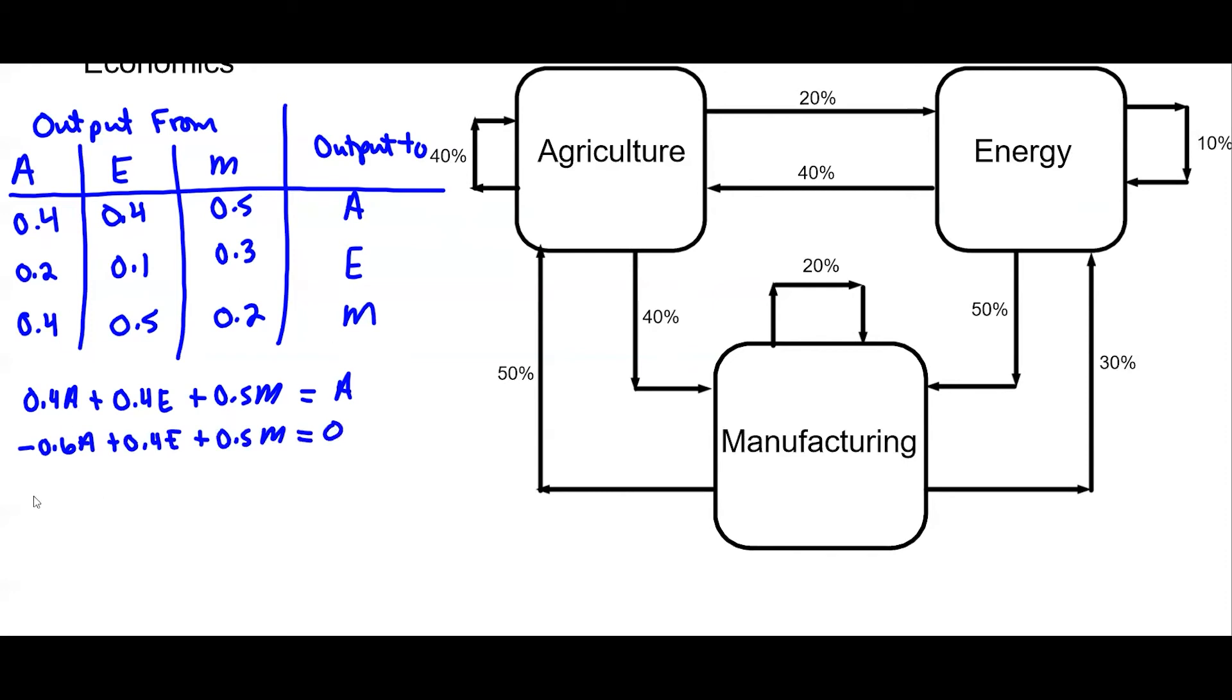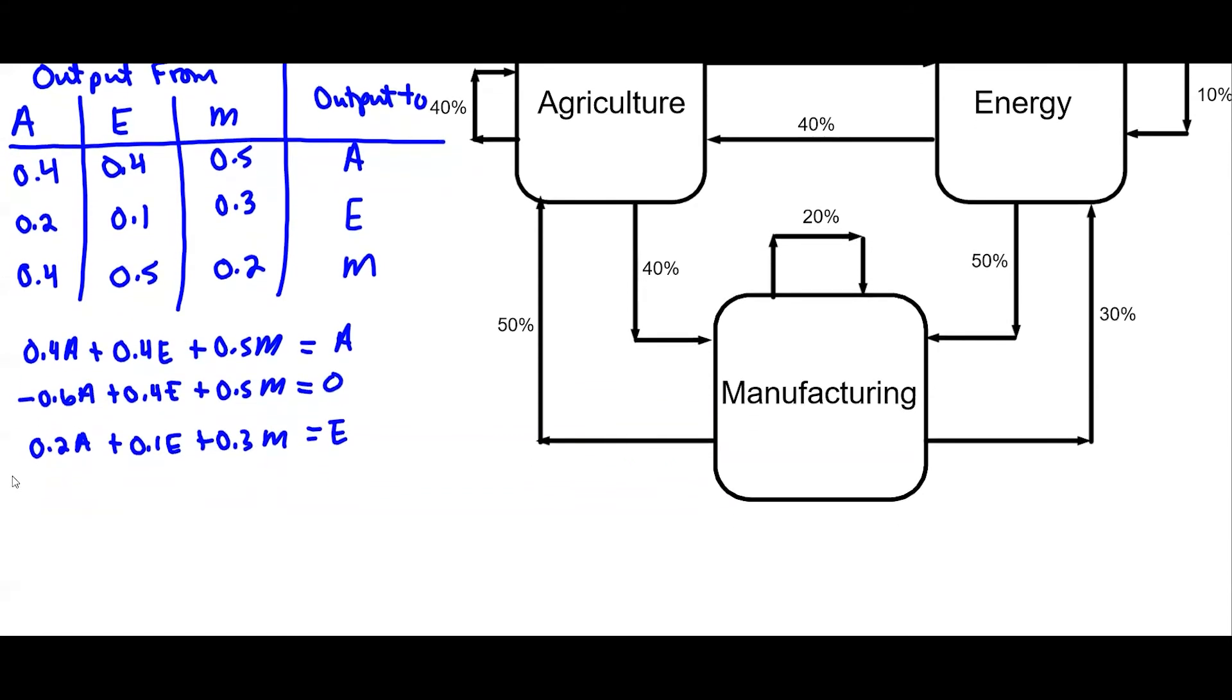So now we'll do energy. For energy, 0.2 agriculture plus 0.1 energy plus 0.3 machinery is equal to the total for energy. If I subtract E from both sides, I'll get negative 0.9E. Then I've got 0.3M and that's equal to zero.